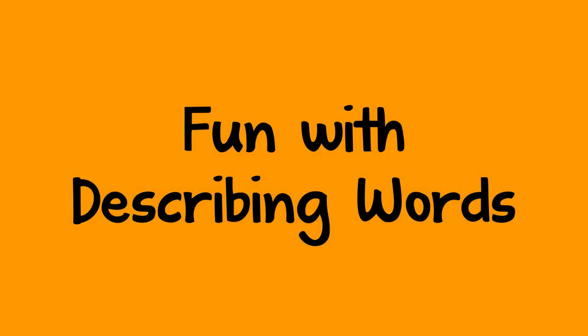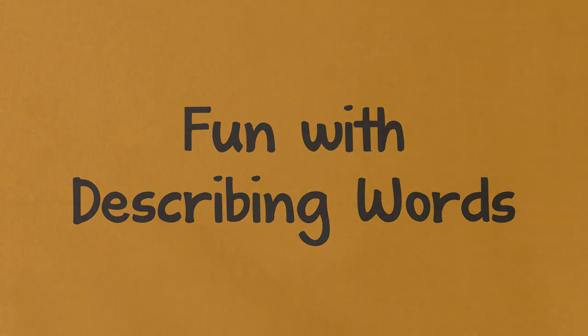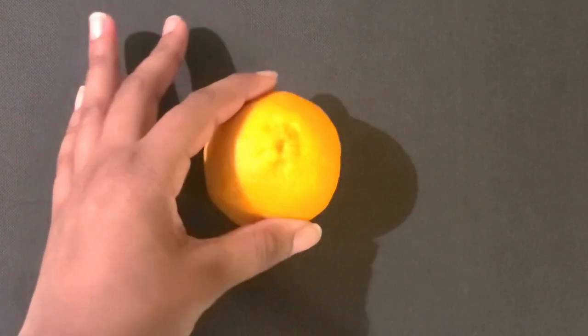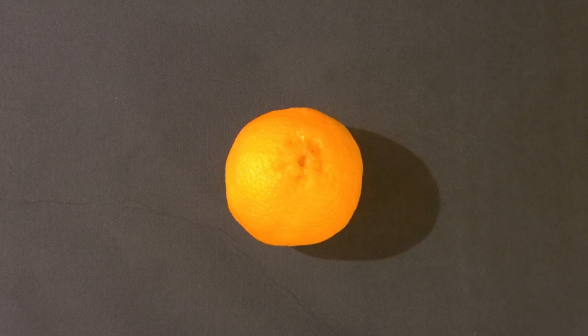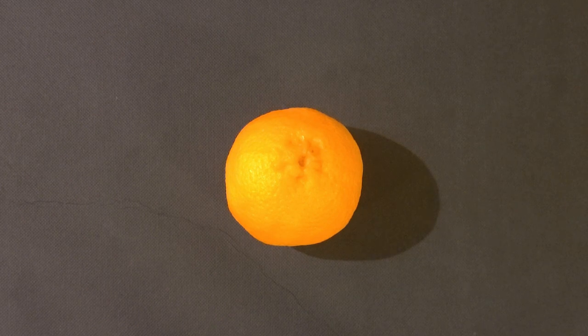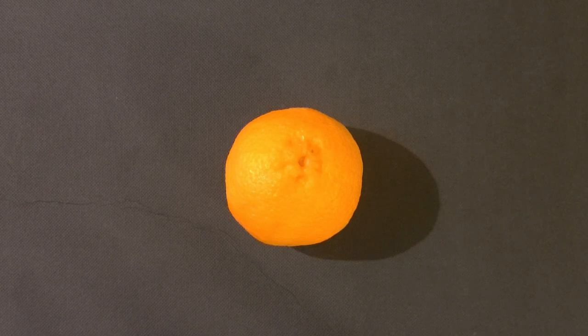You can help a child develop their vocabulary by taking turns describing something. You can start this activity by picking a random object to describe. For example, I chose this orange. Now you and the child can go back and forth describing the orange using different describing words.